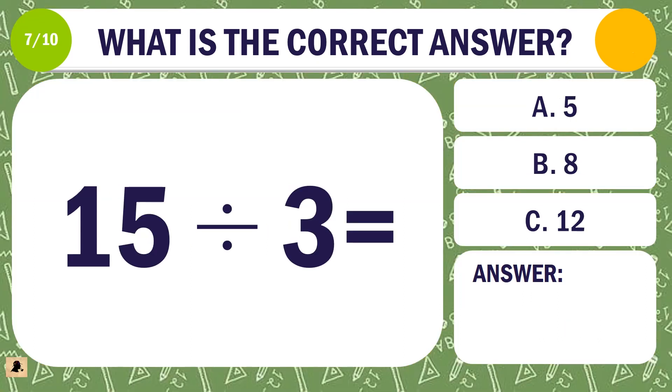Question 7. What is the correct answer for 15 divided by 3? A. 5. B. 8. Or C. 12.